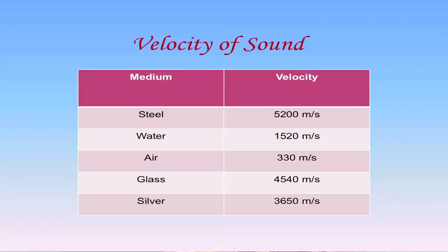In comparison, sound waves travel very slowly. In air, sound travels at 330 meters per second. The velocity of sound changes with the medium as shown on the screen. You can see that whenever sound moves through steel, it moves with a velocity of 5200 meters per second, whereas in the case of glass it moves at 4540 meters per second.